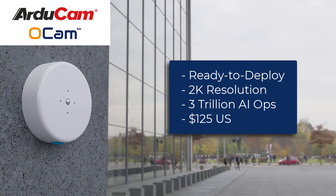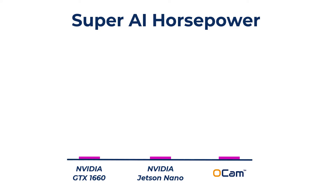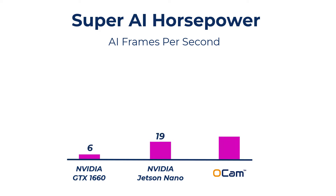It's a well-priced, high-resolution cam with three trillion AI operations per second. That horsepower means it has a seven times faster AI frame rate than a camera you could make with Nvidia Jetson Nano.